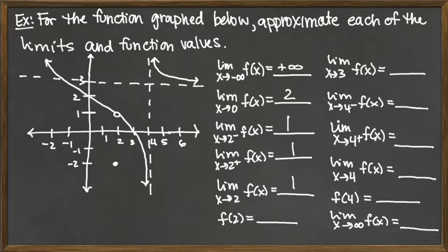When we move to the function value, we're looking for the solid dot. When we input 2, we look along that vertical line and see the solid dot is at the level of y equals negative 2. So the function value there is negative 2. Notice that the function value of negative 2 does not match the limit value, which was the hole in the graph at the level of 1.